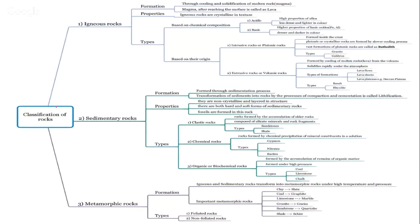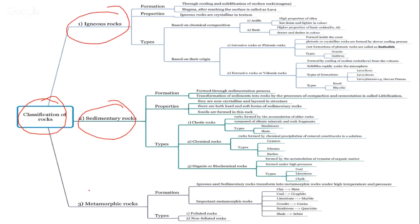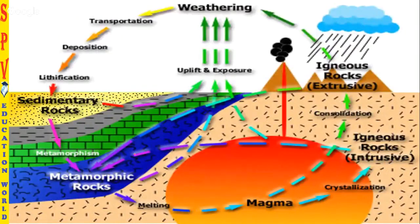Now we shall go to the classification of rocks. We will see three types of rocks, how they are formed, and what their importance is — igneous rocks, sedimentary rocks, and metamorphic rocks. All three types will be covered in detail. Let's have an overview image of how these rock formations have been happening.